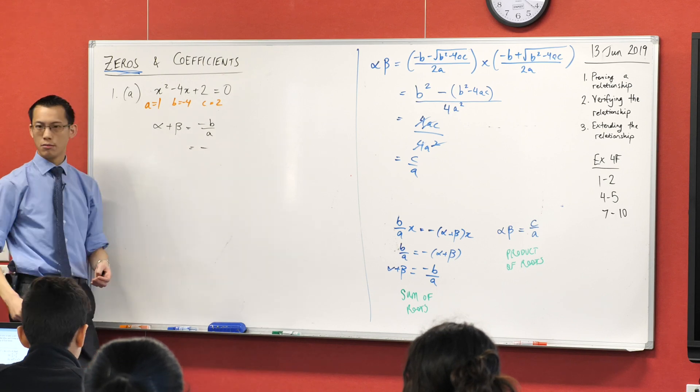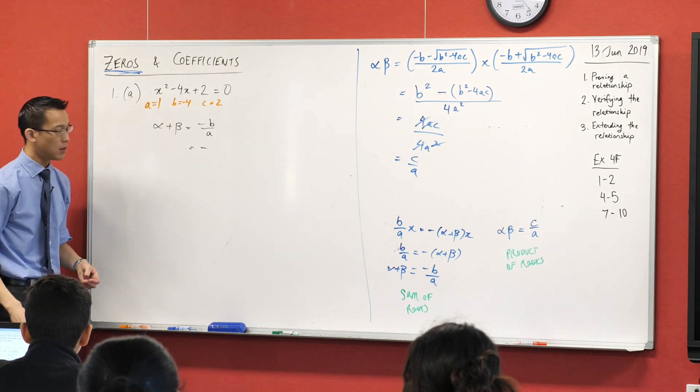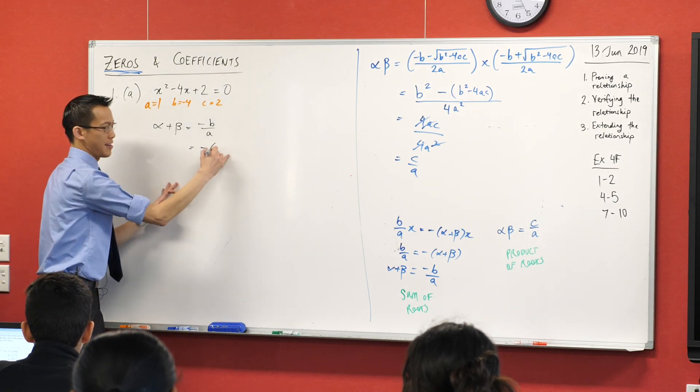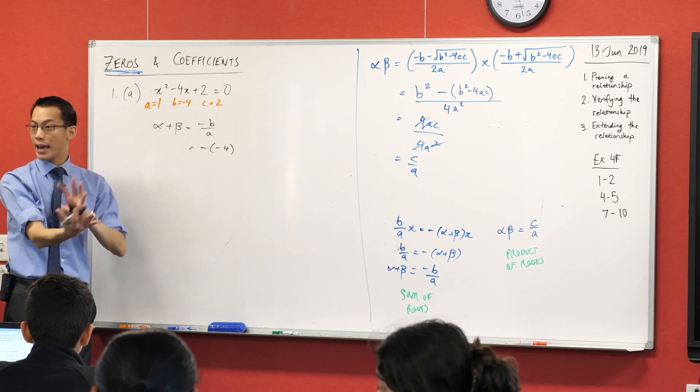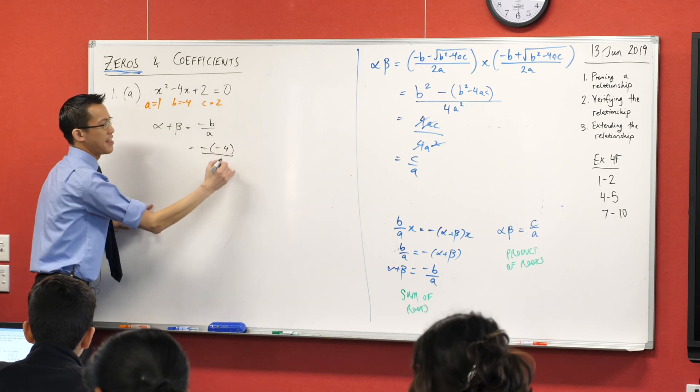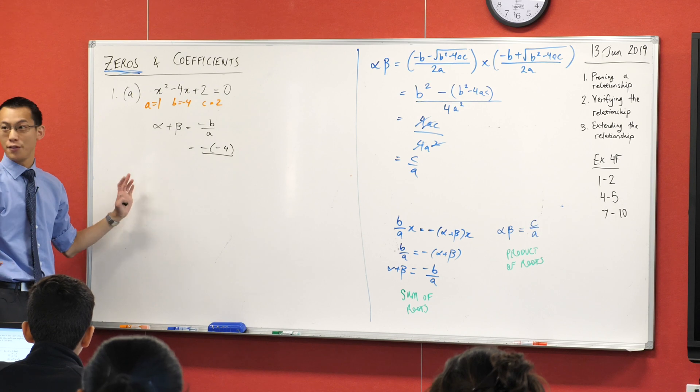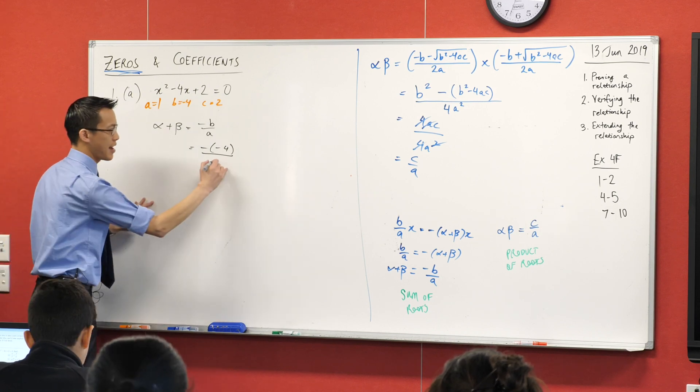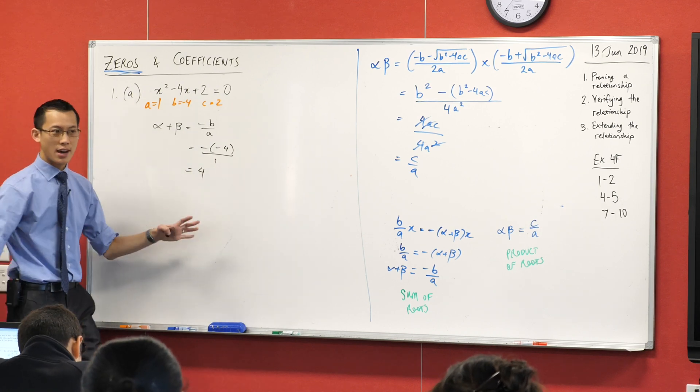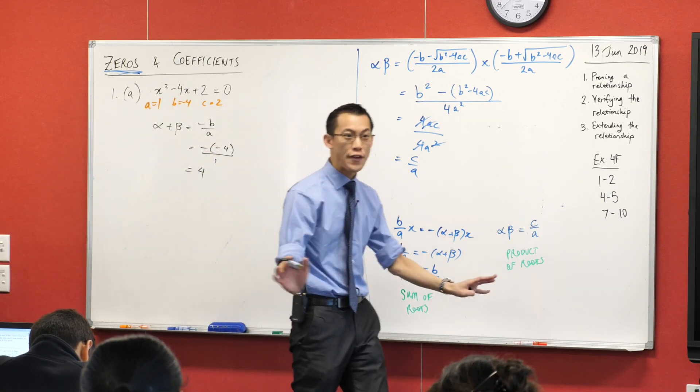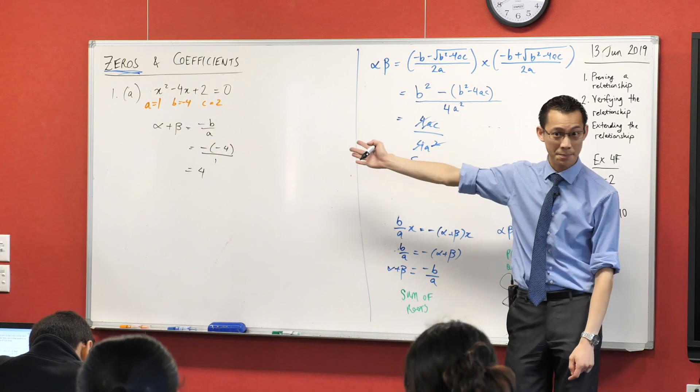And then I'm going to look at what B is and what A is. Do a substitution. Minus. What's B? What did we say it was? It's negative 4. So I've got two negatives there, which I will cancel in a second. Bless you. And then I'm dividing through by A, which in this case is conveniently 1. That's nice. So I just get an answer of 4. Bam. Done. No quadratic formula. No factorization. I just went straight there.